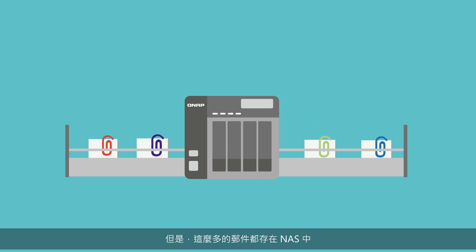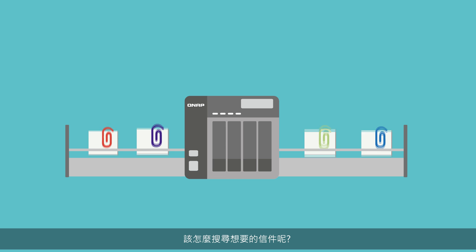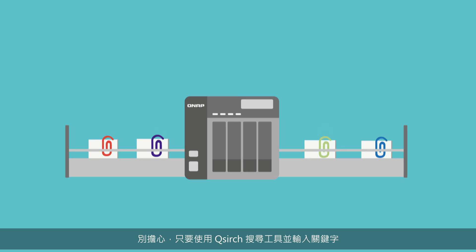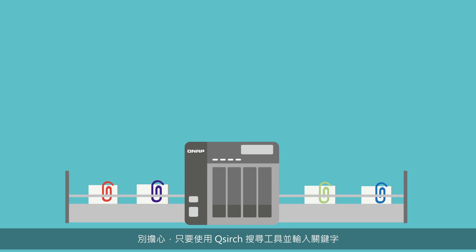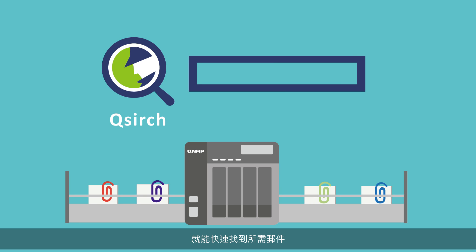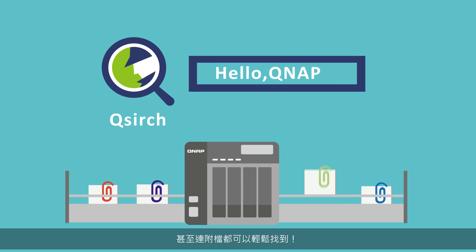Even with a huge amount of emails stored on your NAS, it is never a problem to quickly find specific emails or attachments. By using QNAP's proprietary QSearch search engine, just type in a few keywords and matching emails and attachments will be found within seconds.